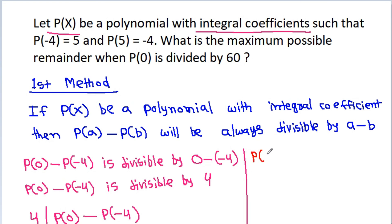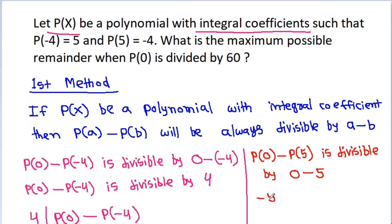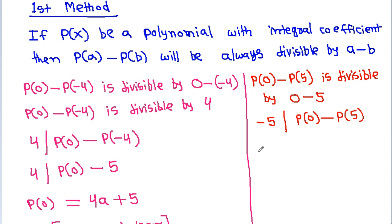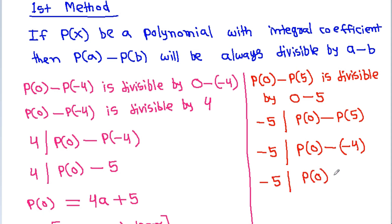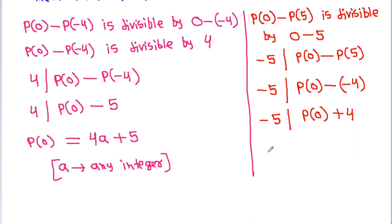And P(0) minus P(5) is divisible by 0 minus 5. So, we can say that minus 5 divides P(0) minus P(5), and P(5) is -4. So, P(0) will be equal to -5B minus 4, where B is any integer.